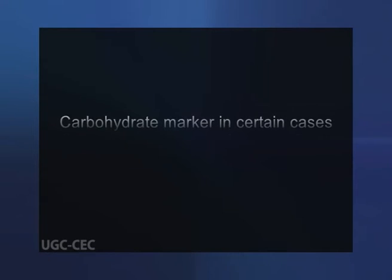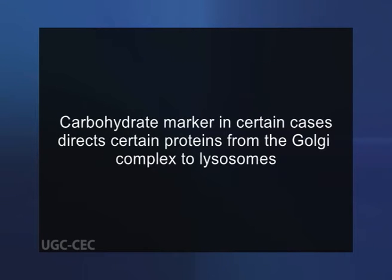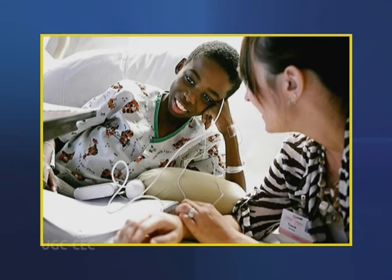A carbohydrate marker in certain cases directs certain proteins from the Golgi complex to lysosomes. Mannose-6-phosphate is in fact the marker that normally directs many hydrolytic enzymes from the Golgi complex to lysosomes. I-cell patients are deficient in the phosphotransferase catalyzing the first step in the addition of the phosphoryl group, with the consequence of mis-targeting of eight essential enzymes.